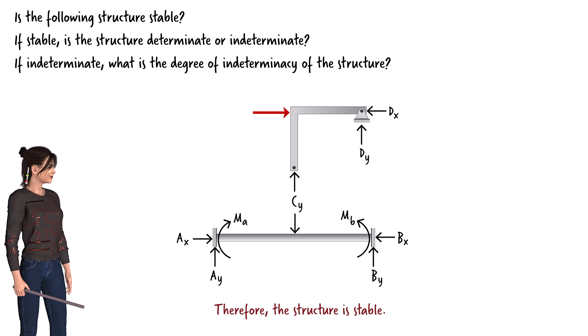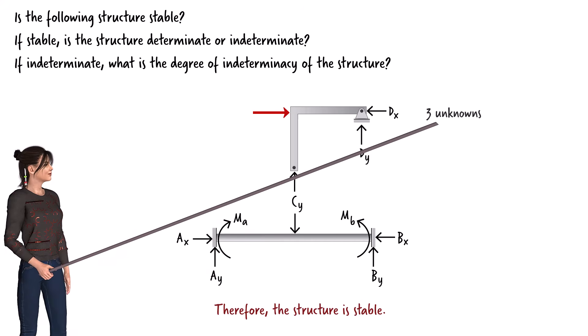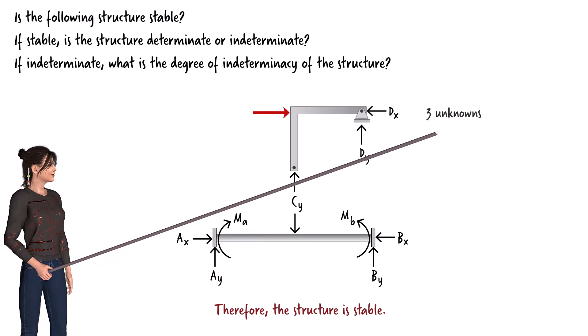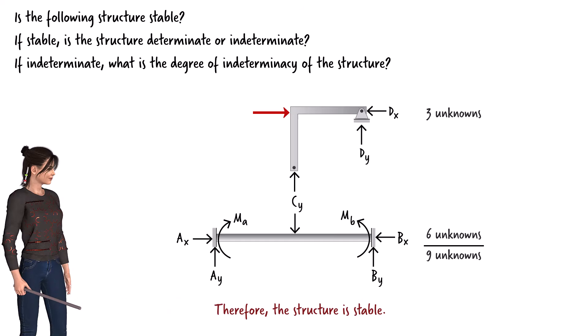To determine if the system is statically determinate, we compare the number of unknowns to the number of equations. There are three unknown reaction forces associated with the frame, and six additional unknowns associated with the beam, for a total of nine unknown forces. We can write three static equilibrium equations for the frame and three more equations for the beam, for a total of six equations.